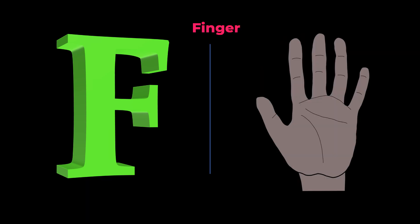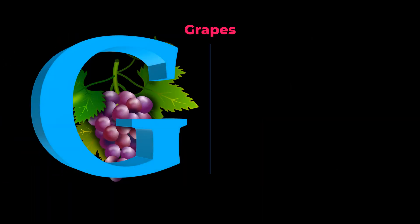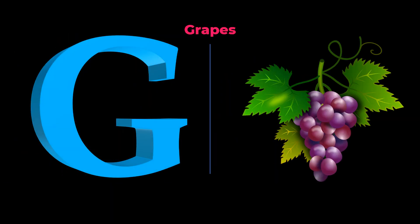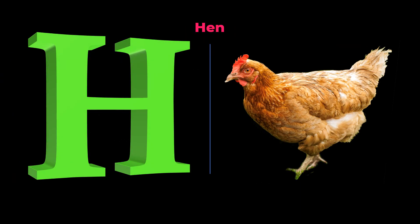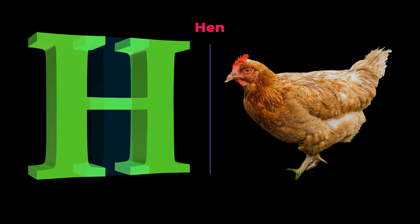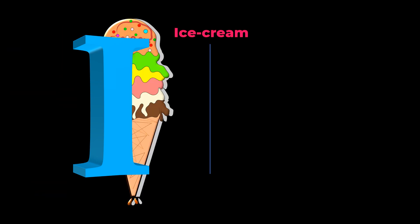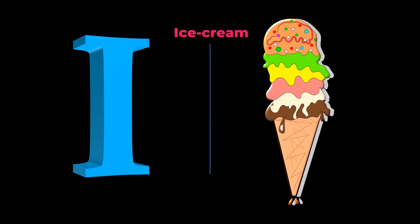F for Finger. G for Grapes. H for Hen. I for Ice Cream. J for Juggler.